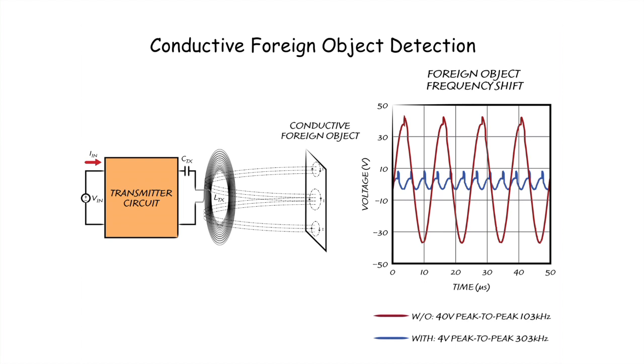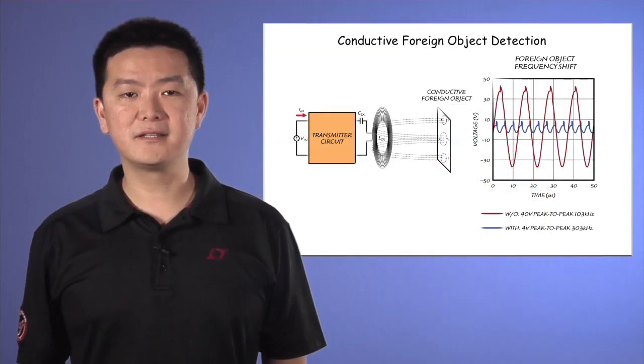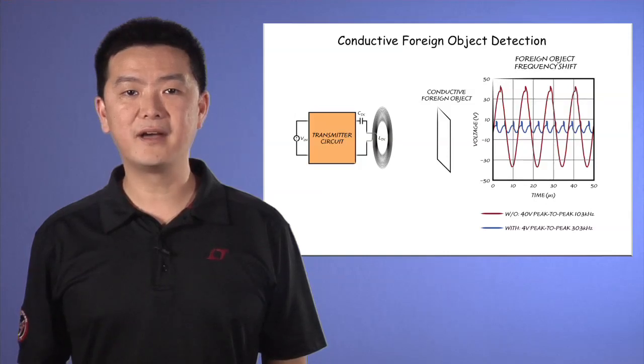The auto-resonant technology of the LTC4125 allows a unique method to detect the presence of a conductive foreign object. The graph here contrasts the frequencies of the voltage developed across the transmit coil with and without the presence of a conductive foreign object. By programming a frequency limit via a resistor divider, the LTC4125 stops delivery of any power when this frequency limit is exceeded.